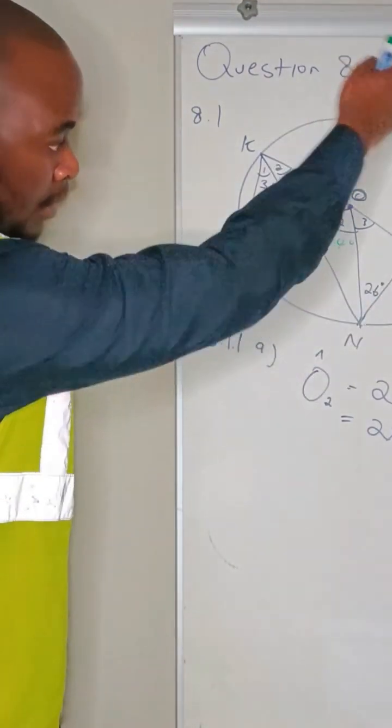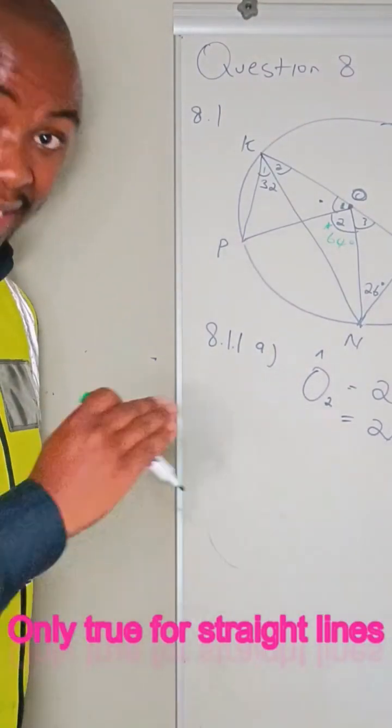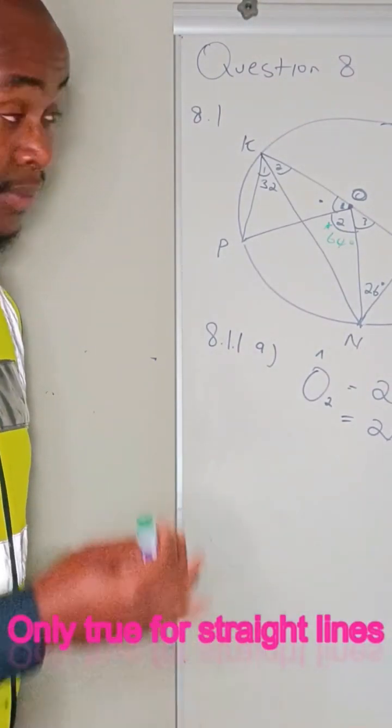KOP, KOM is bisecting LN. It's a line and lines are straight so...